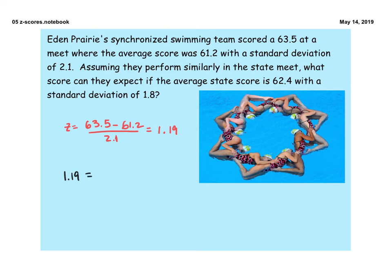And we're trying to figure out what will they expect at the state meet. So what is x going to be given that the state meet average is 62.4 with a standard deviation of 1.8? So we're doing a little two-step solving problem here. We're going to take 1.19 and we're going to multiply 1.8.